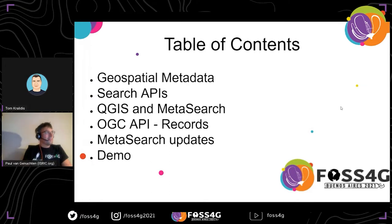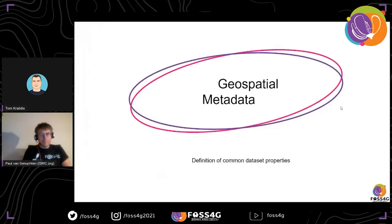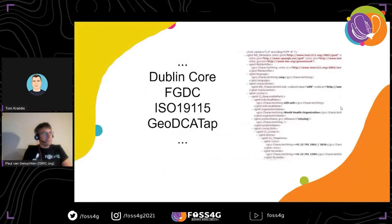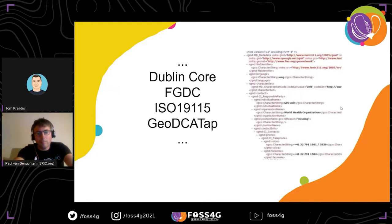First up: geospatial metadata. It's the who, what, where, when, and why of your data set. Documenting your data set with those constructs helps in documentation, preservation, and especially discovery. Having the right metadata in place will allow your data to be discovered on open data search portals, mass-market search engines, or elsewhere. In the geospatial ecosystem we've been doing metadata for decades — there was the Federal Geographic Data Committee content standard for digital geospatial metadata, around since the 90s.